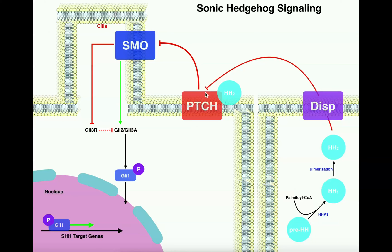We have inhibition of inhibition, which leads to net smoothened activation. Smoothened has two major functions: first, it leads to direct activation of GLI-2 and GLI-3A — these are proteins that will phosphorylate GLI-1, which is necessary. But smoothened also inhibits the GLI-3 repressor. The GLI-3 repressor's normal function is to inhibit GLI-2 and GLI-3A, so by inhibiting this repression, that's another factor increasing the activity of GLI-2 and GLI-3A. So we have direct activation and inhibition of inhibition.